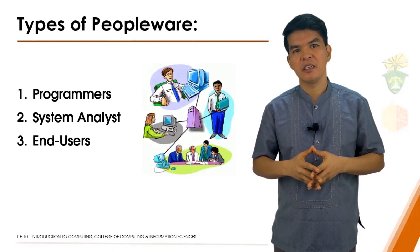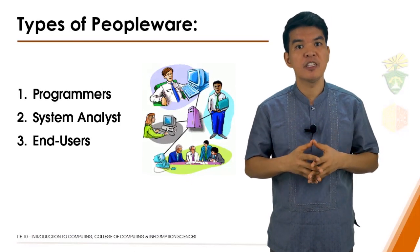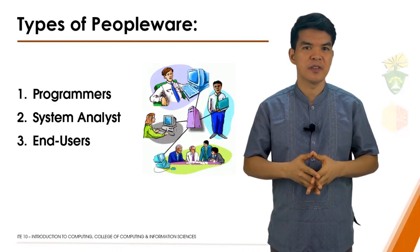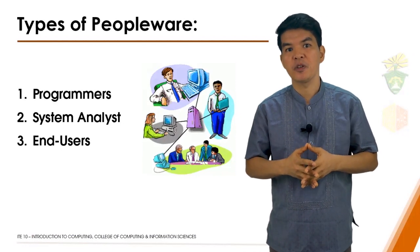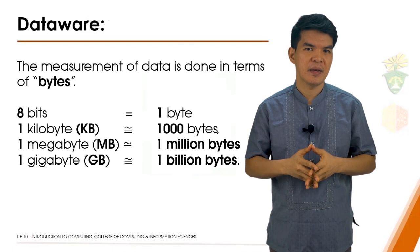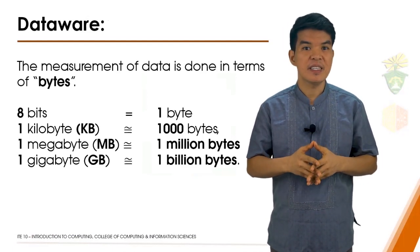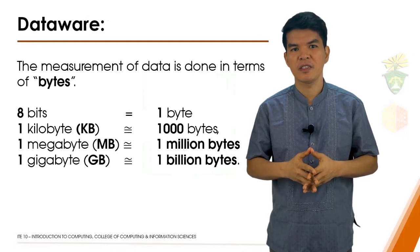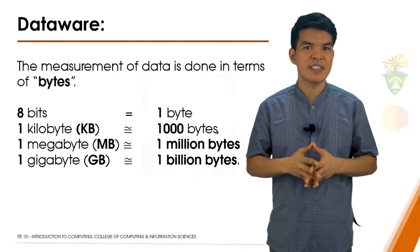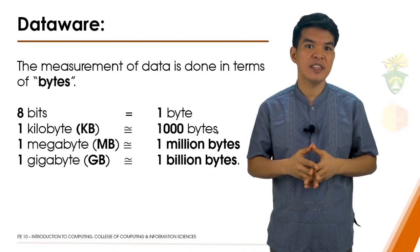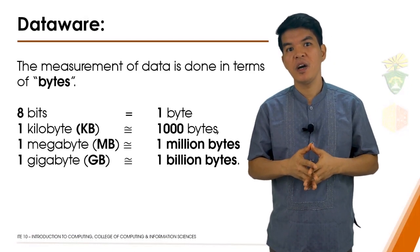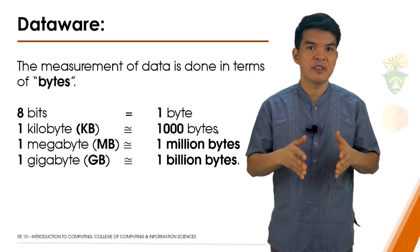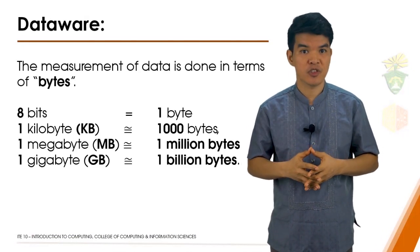Data is essentially the real facts and figures that we input into the computer. The data is processed via the computer system and becomes information. Information or digital information is often measured in terms of bit, bytes, kilobytes, megabytes, gigabytes, etc. A bit is a binary digit — the smallest increment of data in a computer. A bit can hold only one of two values: 0 or 1. Eight bits is equal to 1 byte. One kilobyte is approximately 1,000 bytes. One megabyte is approximately 1 million bytes. An in-depth explanation about data measurement and representation will be discussed in the succeeding sessions of this course.